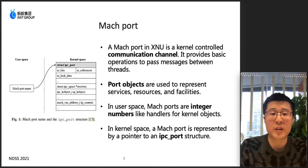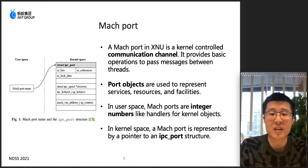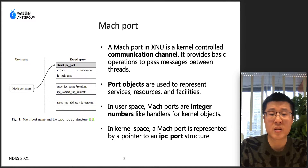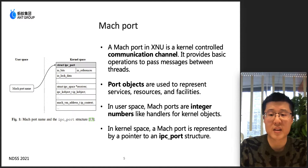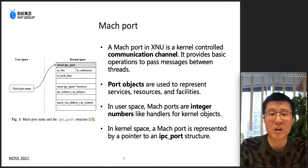Before we talk about the POP attack, let me briefly introduce Mach port. A Mach port in XNU is a kernel-controlled communication channel. It provides basic operations to pass messages between threads. Ports are used to represent resources, services, and facilities like hosts, tasks, threads, and memory objects. In user space, a Mach port name is an integer number representing a handle for a Mach port in kernel space. In the kernel, a Mach port is represented by a pointer to an IPC port object.